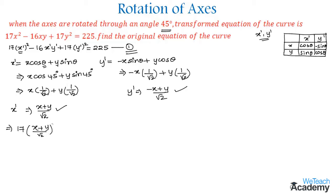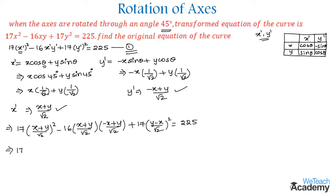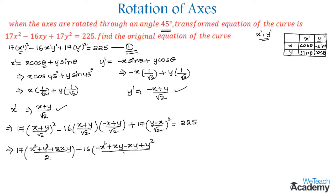Substituting into equation 1: 17 times (x plus y)/√2 whole squared, minus 16 times (x plus y)/√2 times (minus x plus y)/√2, plus 17 times (minus x plus y)/√2 whole squared equals 225. Expanding using (a+b)² and (a-b)² formulas: 17(x² + y² + 2xy)/2 minus 16(y² - x²)/2 plus 17(y² + x² - 2xy)/2 equals 225.